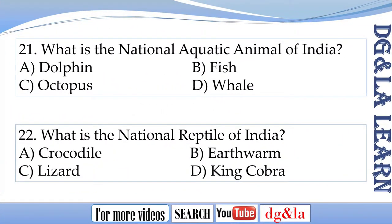Question 21: What is the national aquatic animal of India? The options are A. Dolphin, B. Fish, C. Octopus, D. Whale.